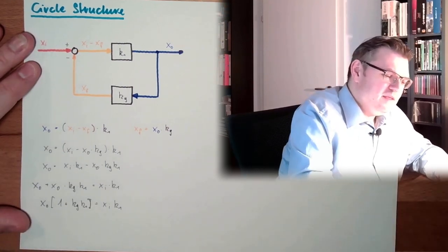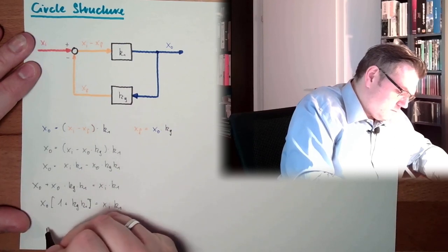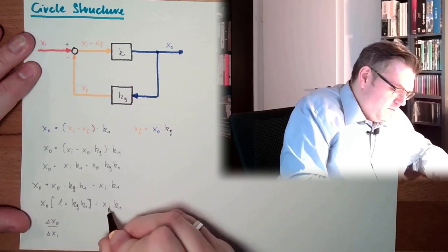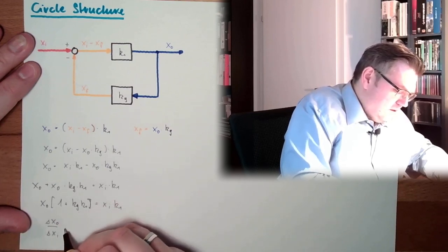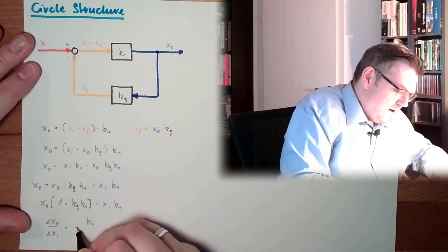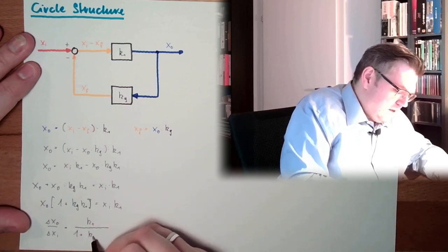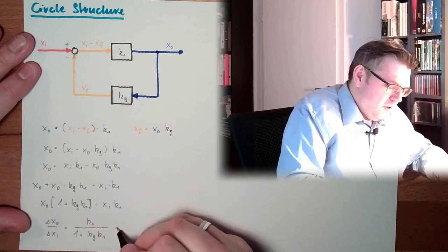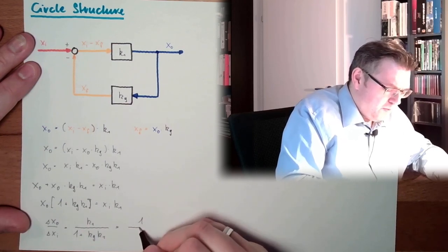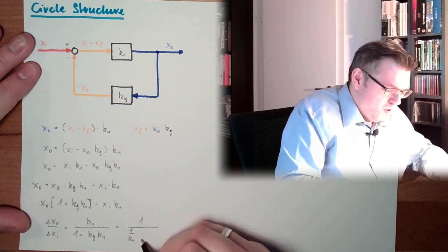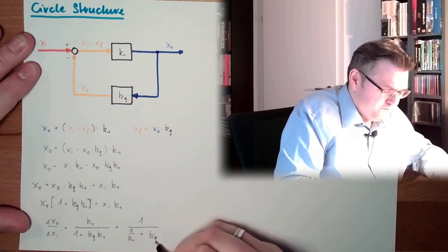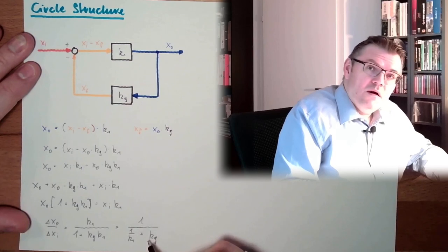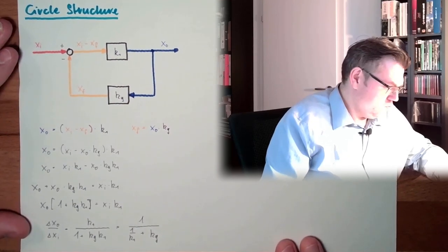And now I want to have the sensitivity. So I want to have delta XO divided by delta Xi. So I bring this to this side. And this is here K1 divided by 1 plus KG K1. And now I will do K1 below. So here we have 1 divided by 1 divided by K1 plus KG. So I divide it at the upper part, at the lower part of this fraction, I divide it by K1.